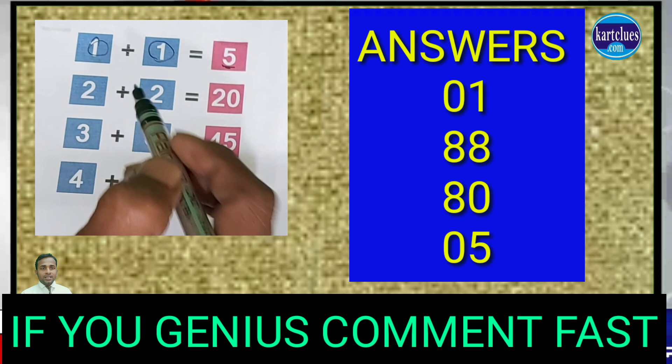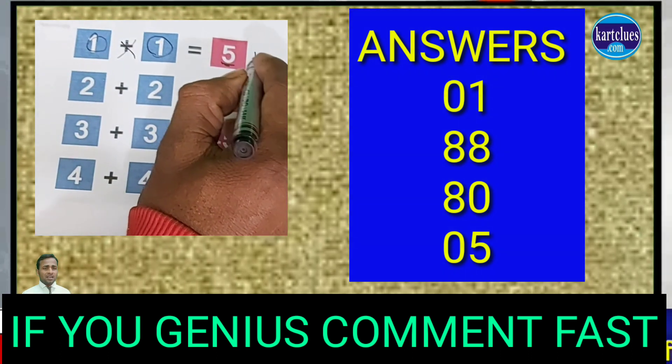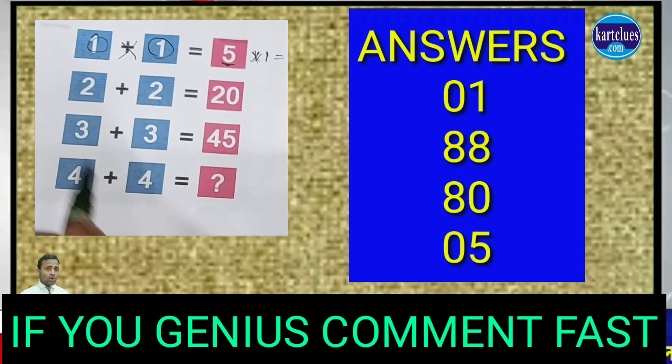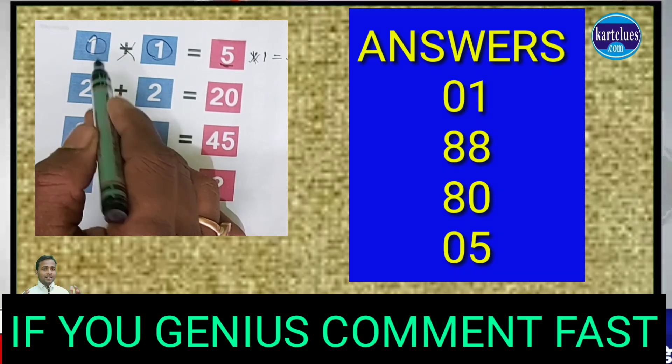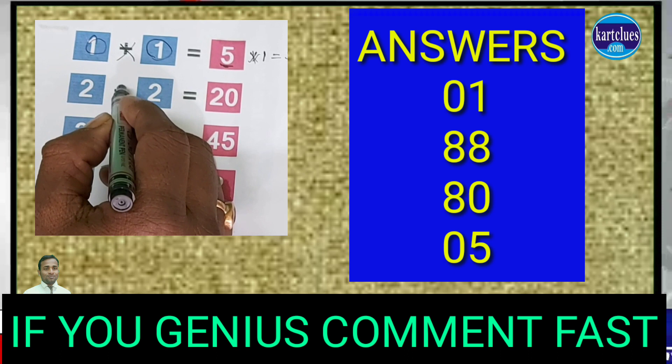1 and 1, 1 into 1, 1 into 1. 1 means here you multiply, 1 means 5. I hope you understand. Now you convert plus into multiply. See, now also here you convert plus into multiply.